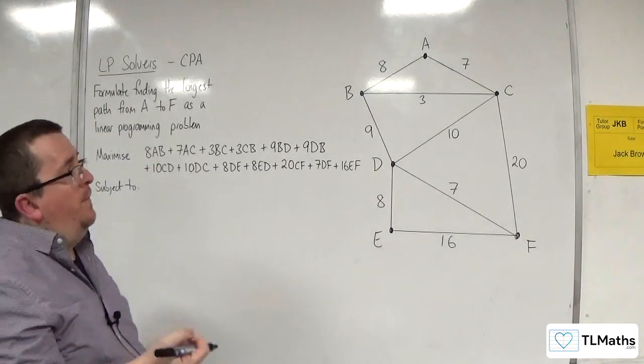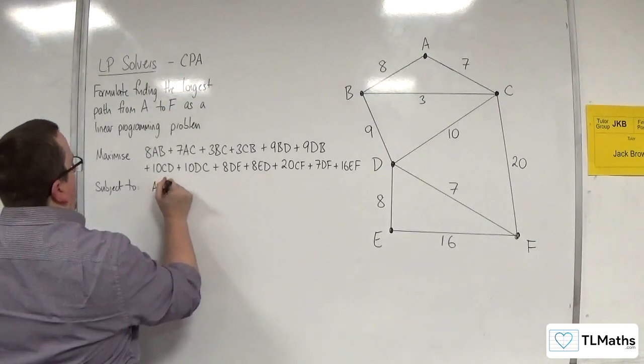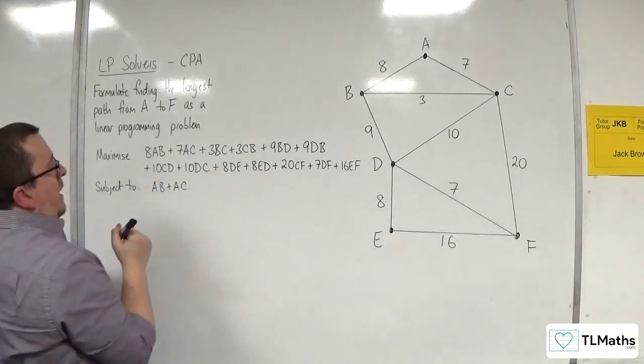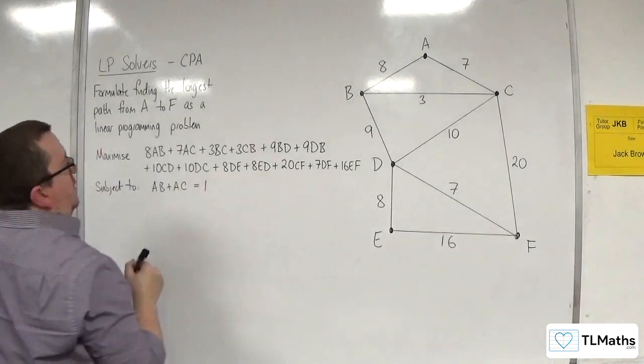So AB plus AC, that's going to have to be equal to 1, because I'm going to choose one of those routes.